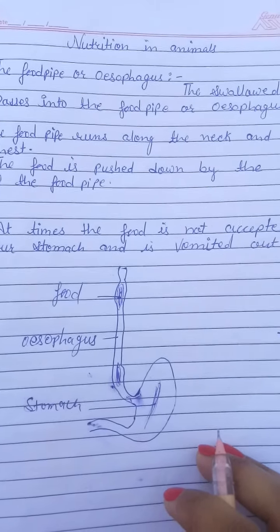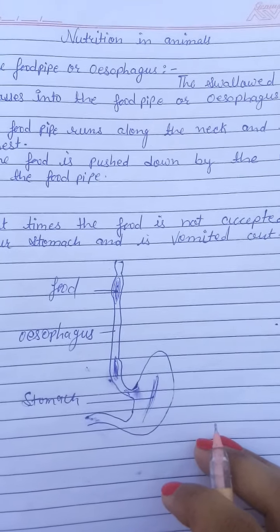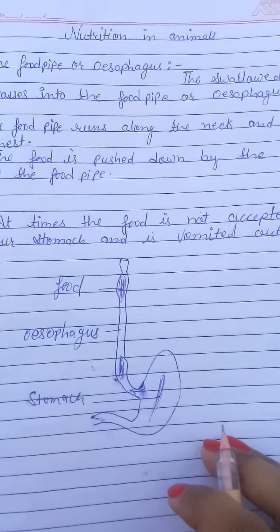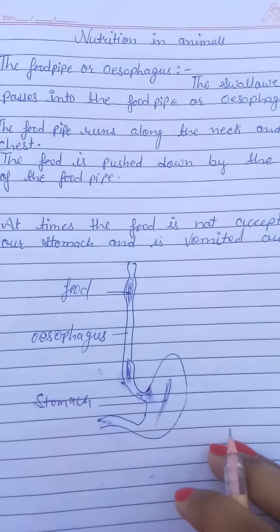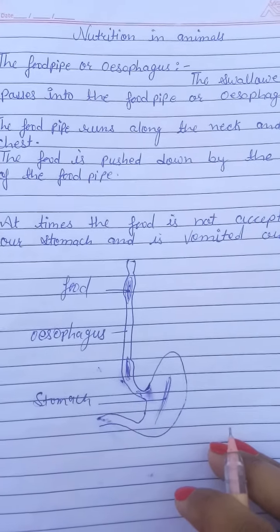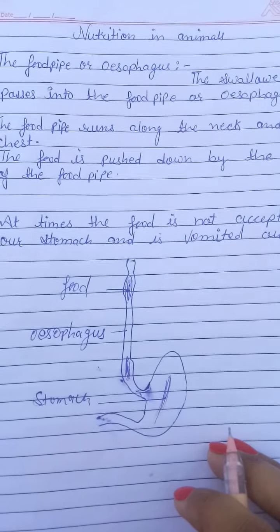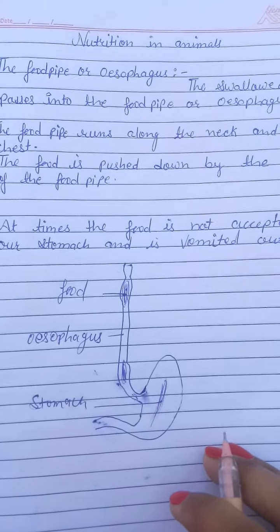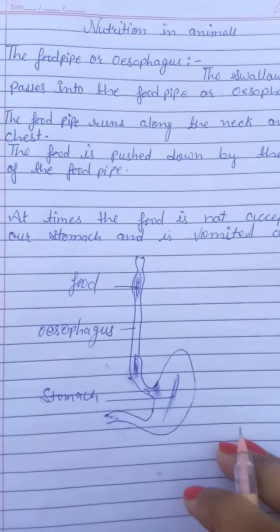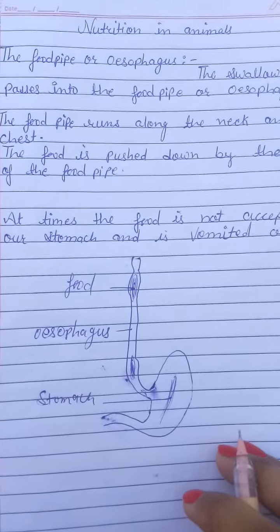The next part is the stomach, which is a wide part of the digestive system. We will study about the stomach in our next video. Some juices, mucus, and acids like HCl are present in the stomach, and these help in the digestion of food.